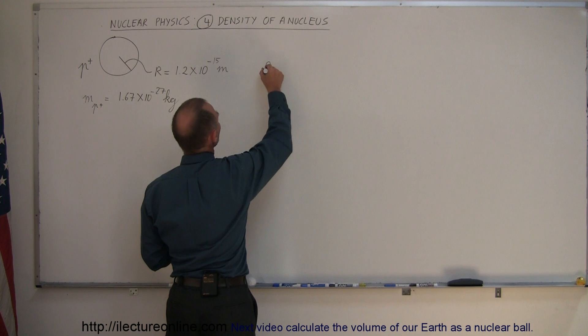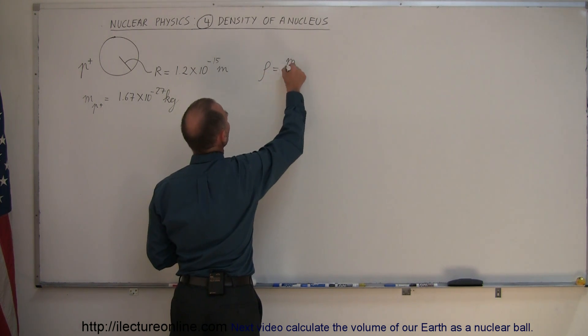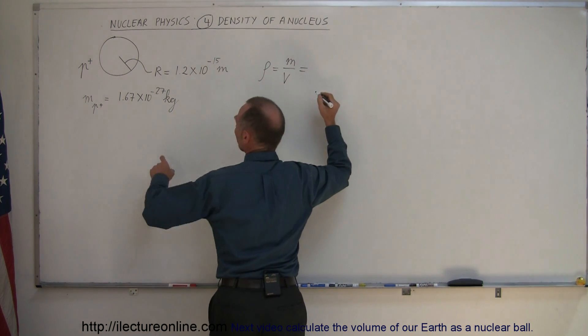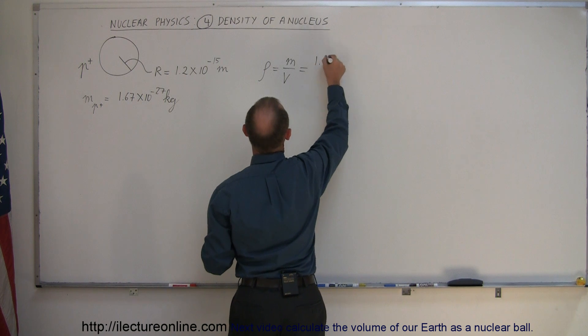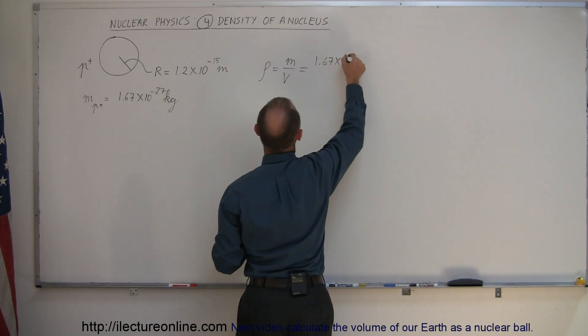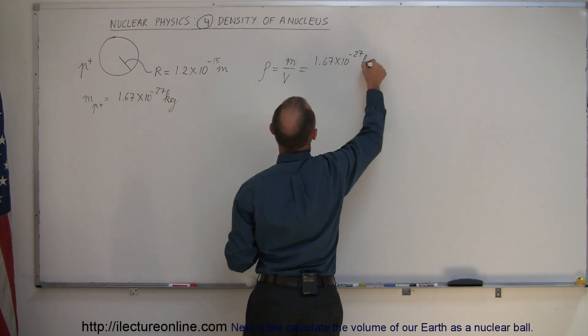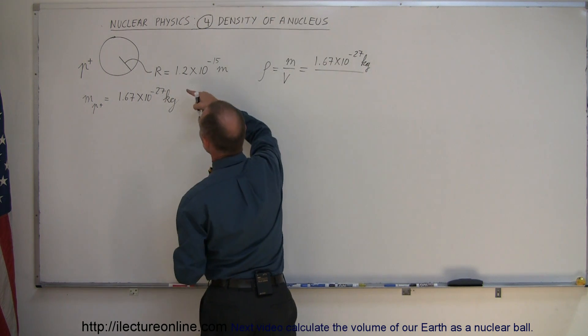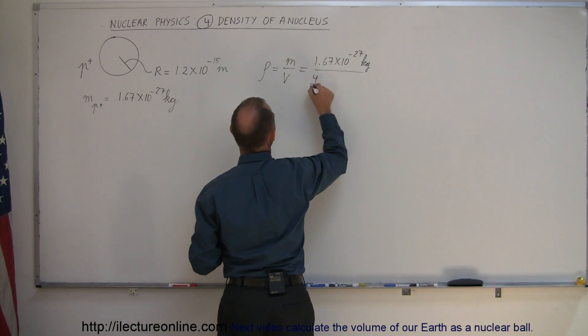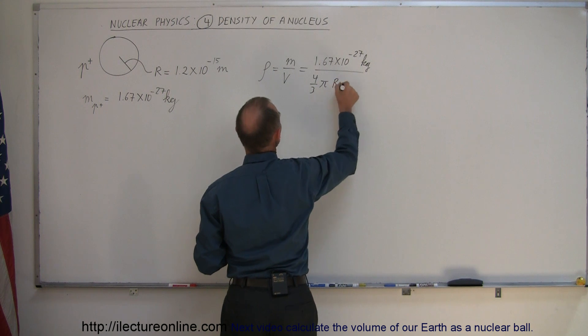The density can be defined as the mass divided by the volume. Knowing the mass of a single proton is 1.67 times 10 to the minus 27 kilograms, and the volume would be four-thirds pi times the radius